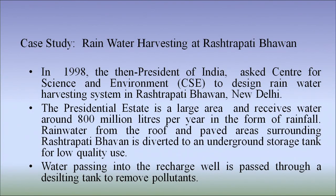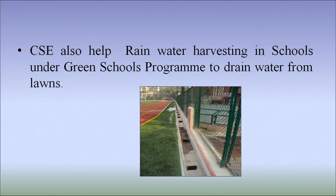The second case study is related to rainwater harvesting at Rashtrapati Bhavan, undertaken by the Centre for Science and Environment (CSE), a New Delhi-based NGO. CSE recommends the revival of traditional water harvesting systems along with modern technologies. In 1998, the then President of India asked CSE to design a rainwater harvesting system in Rashtrapati Bhavan, New Delhi. The presidential estate receives water around 800 million litres per year in the form of rainfall. Rainwater from the rooftop and paved areas is diverted to underground storage tanks, and water passing into the recharge well is passed through a desilting tank to remove pollutants. CSE also helps with rainwater harvesting in schools under the Green School Program to drain water from lawns.